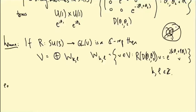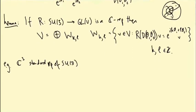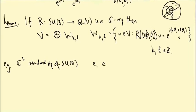Let's do an example. Let's take C³, the standard representation of SU3. This is three-dimensional because they're 3×3 matrices. It has basis e₁, e₂, e₃ — the usual basis vectors (1,0,0), (0,1,0), and (0,0,1). What are the weights of these vectors under this representation?